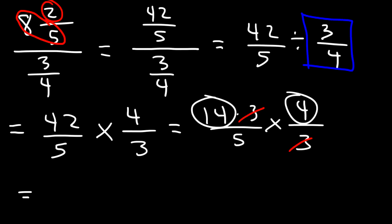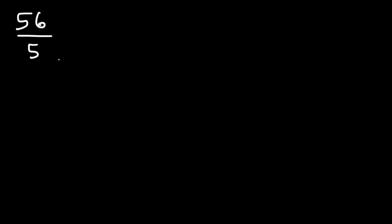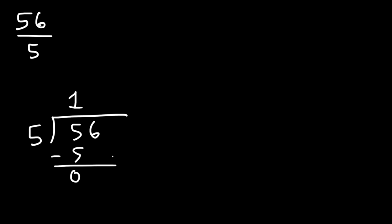10 times 4 is 40, 4 times 4 is 16, and 40 plus 16 is 56, so we have 56 over 5. Now we need to convert this into a mixed number using long division. 5 goes into 5 one time, 5 minus 5 is 0, bring down the 6. 5 goes into 6 one time, and 6 minus 5 is 1, so this is going to be 11 and 1 over 5.